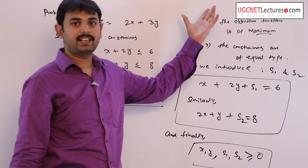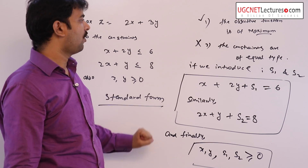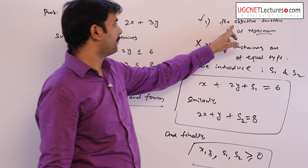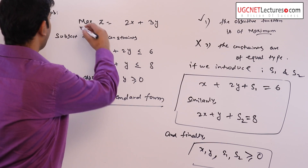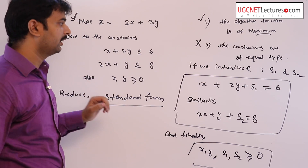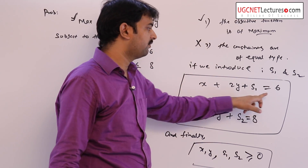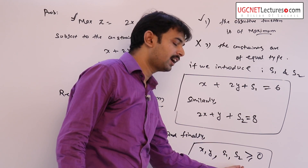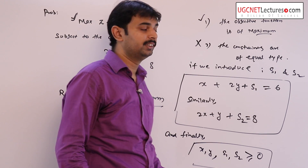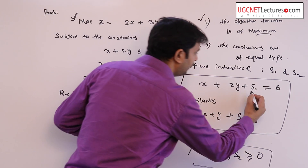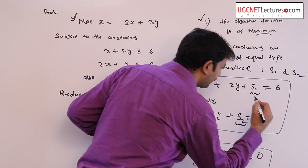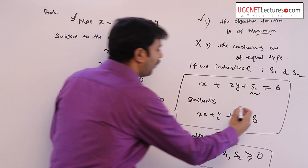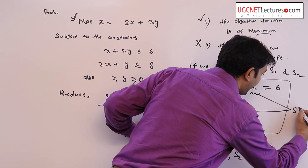So, all three criteria of the standard form are now satisfied: the objective function is of maximization type, the constraints are of equal type, and all decision variables x, y, s1, and s2 are non-negative. These real numbers s1 and s2 are called slack variables.